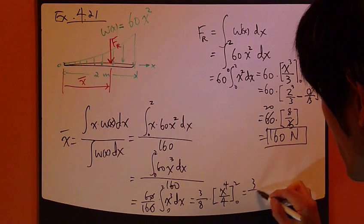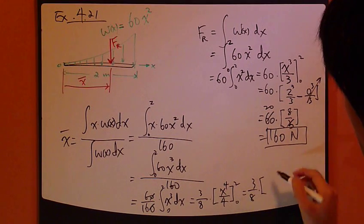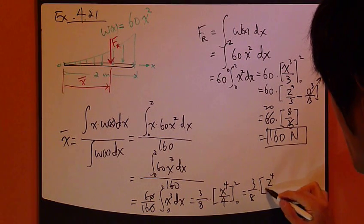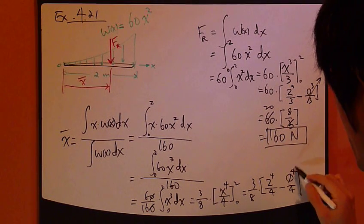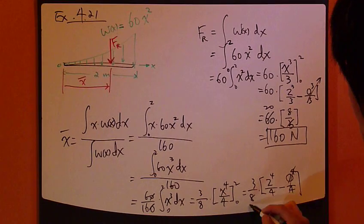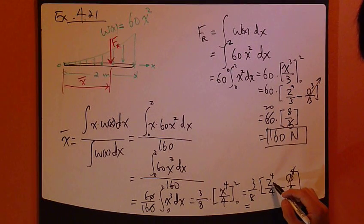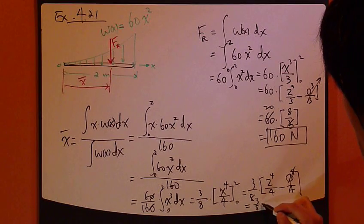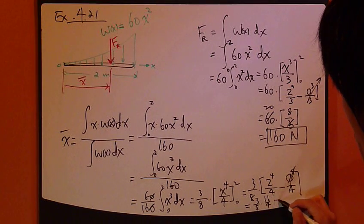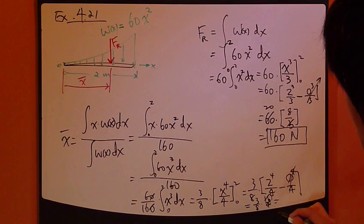Keep going. 3 over 8. Plug it in here. So 2 to the 4, divided by 4, minus. So 0 to the power of 4, so this whole time goes away. So this is 16. So 3 times 8, times 16, divided by 4, which is 4.